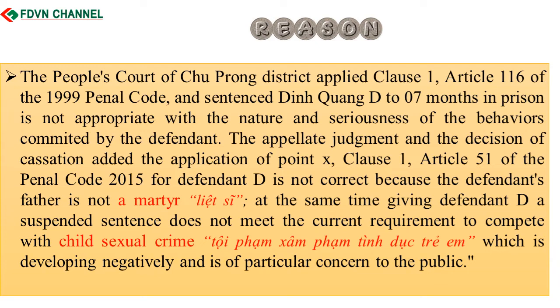The appellate judgment and cassation decision additionally applied Point X, Clause 1, Article 51 of the Penal Code 2015 for defendant D, which was incorrect because the defendant's father is not a martyr. At the same time, giving defendant D a suspended sentence did not meet the current requirements to combat child sexual crime, which is developing negatively and is of particular concern to the public. The representative of the Supreme People's Procuracy proposed the Council of Judges to accept the protest and abrogate all prior judgments for retrial in accordance with the law.